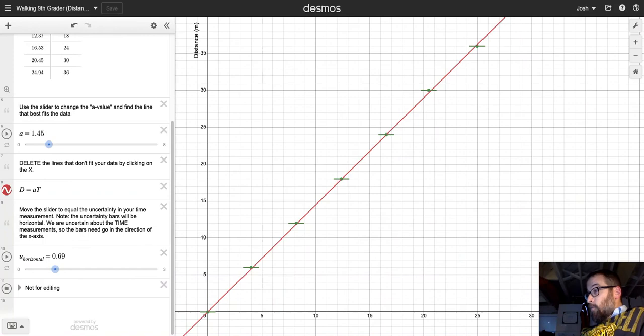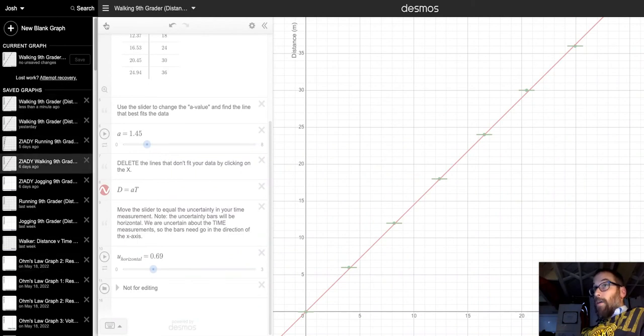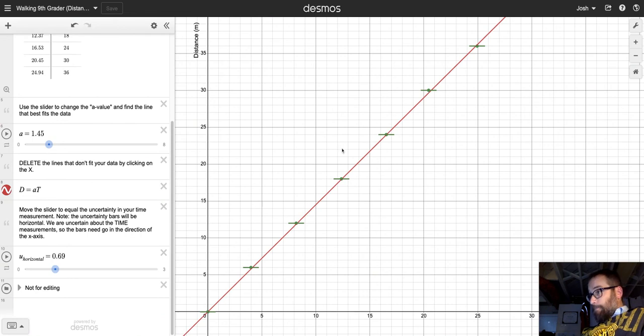And then once you've done that, you have a save button, and behind these three bars will be all the graphs you make online with Desmos that you can access later. Okay, now one last thing before we're done.